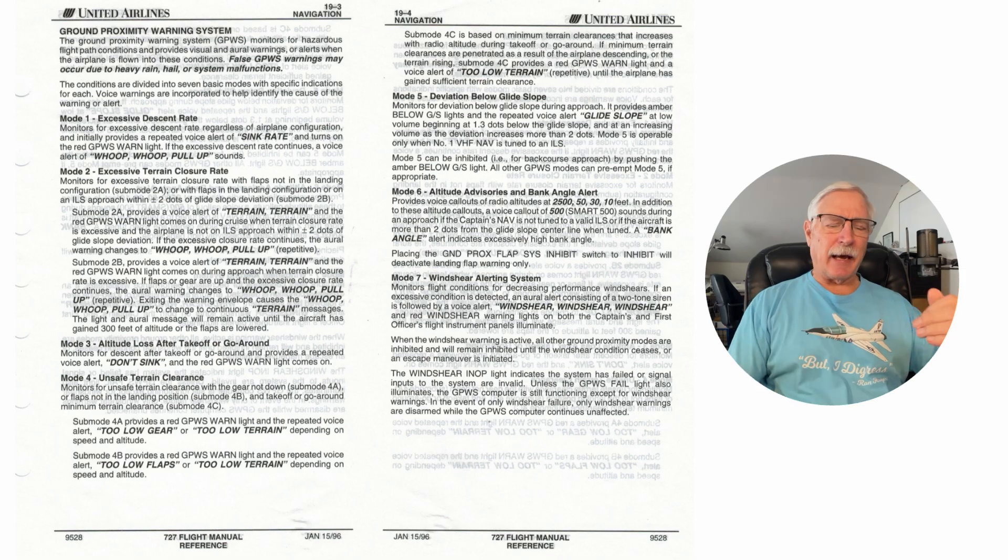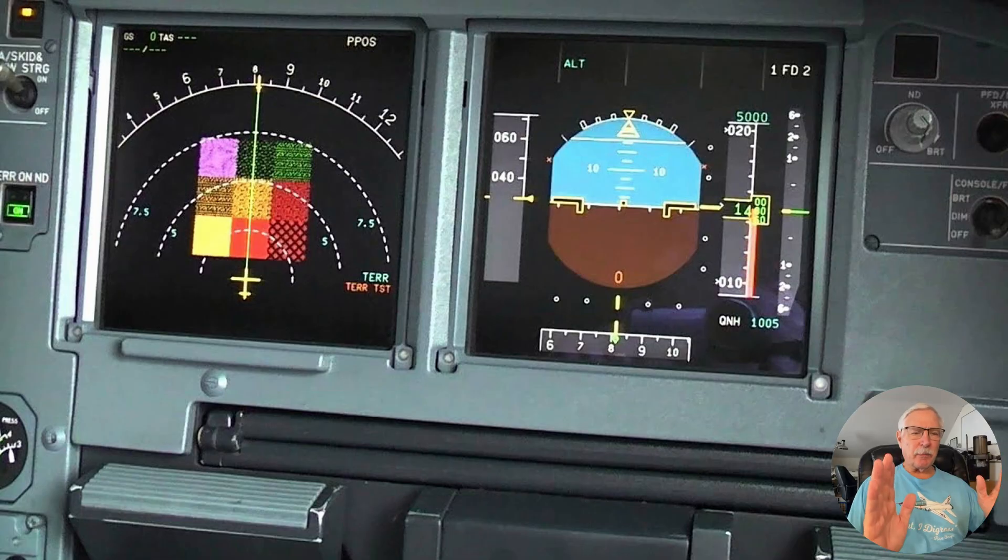But it didn't have the predictive capability that the modern aircraft now have where it's not just looking straight down. It's actually telling you that if you don't get your act together you're going to come into some terrain. It gives you the predictive warning which is very important.